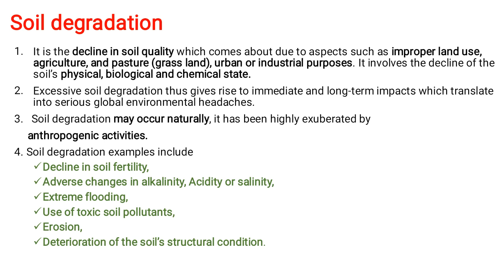Soil degradation is a decline in soil quality which comes about due to aspects such as improper land use, agriculture, pasture, and urban or industrial processes. It involves the decline of the soil's physical, biological, and chemical state — so the soil loses its physical, biological, and chemical characteristics.